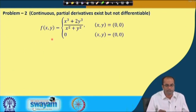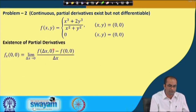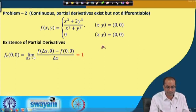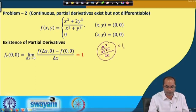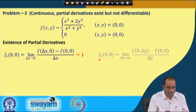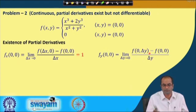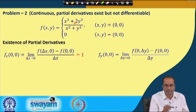Problem 2 is of similar kind: again the function is continuous, partial derivatives exist, but it is not differentiable. For the partial derivatives at (0,0): f_x(0,0) = lim[delta x→0] [f(delta x, 0) − f(0,0)] / delta x. Setting y = 0 gives delta x³ / delta x² divided by delta x, yielding the limit as 1. Similarly, f_y(0,0) = 2. So f_x = 1 and f_y = 2 at the origin.